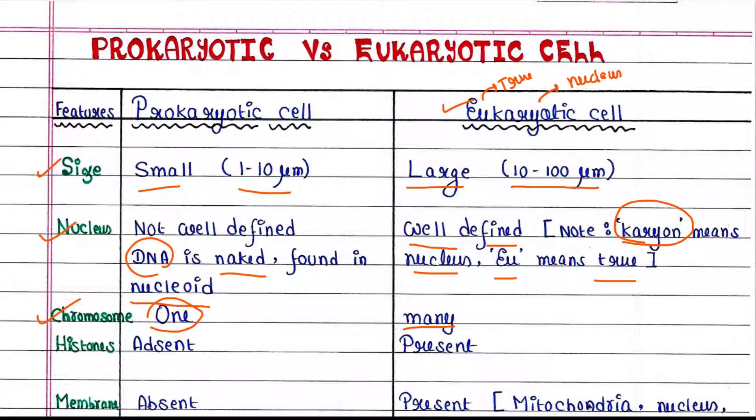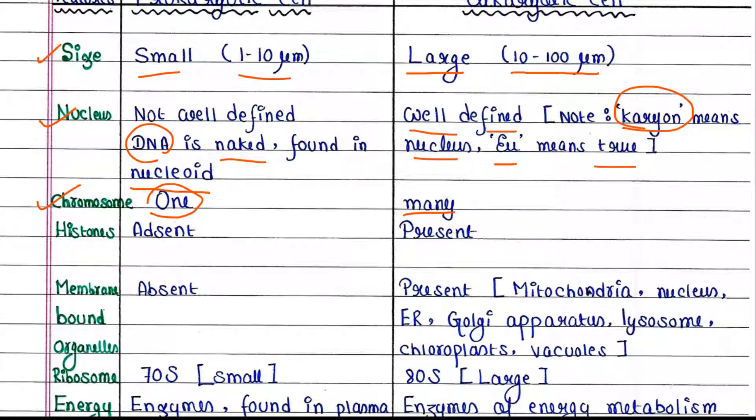Next, histones. Histones are proteins which are absent in prokaryotic cells and present in eukaryotic cells. Histones are actually found in the chromosome. So DNA and histones make the chromosome in eukaryotic cells.